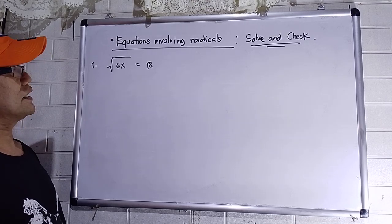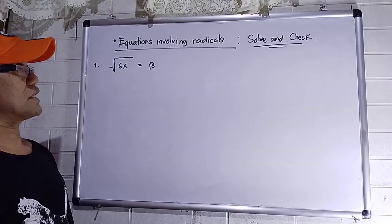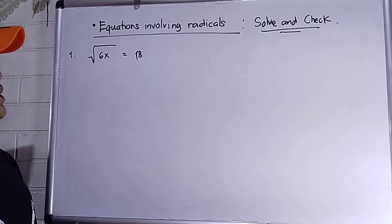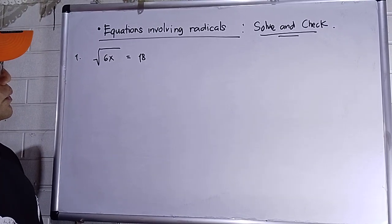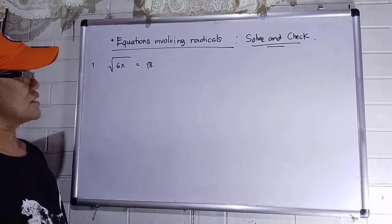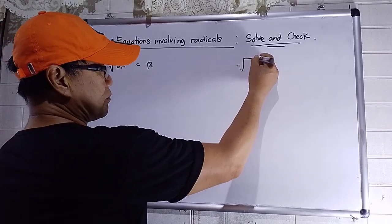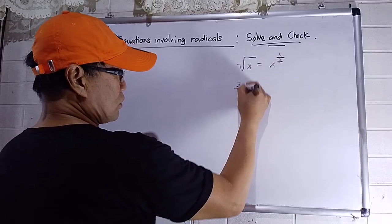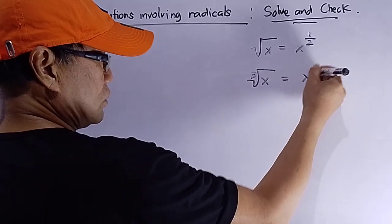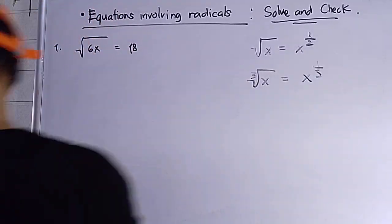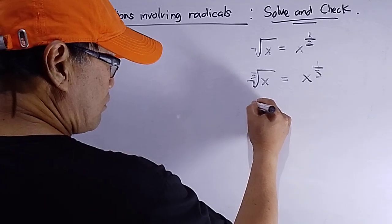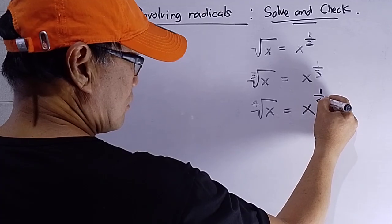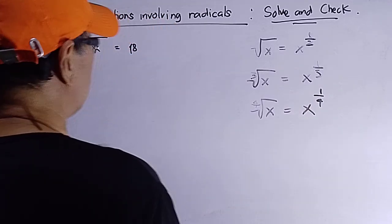Hello guys, good day, especially to students who want to study mathematics. Today's topic is equations involving radicals. Radicals include the square root, which is x raised to the power of 1/2, the cube root of x which is x to the 1/3, and the fourth root which is x raised to 1/4.